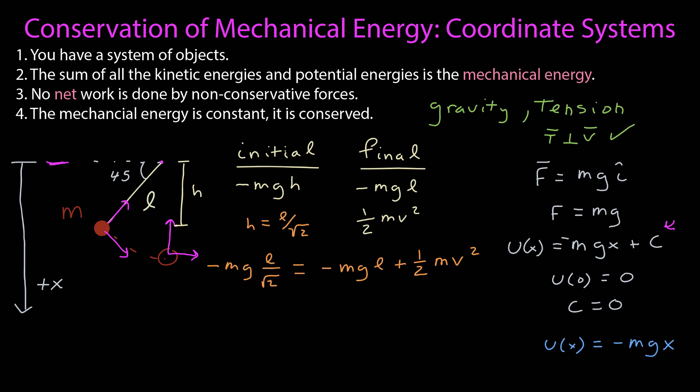I've already established that I have conservation of mechanical energy, so the total initial energy is equal to the total final energy. I went ahead and calculated what h was in terms of l. I know that it was at a 45 degree angle, so if I do a right triangle, I know that the distance h is equal to l cosine or sine theta, which is l over the square root of 2.